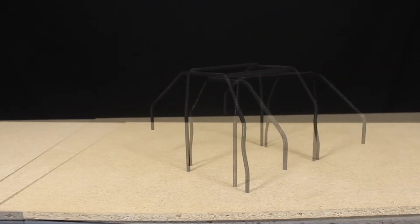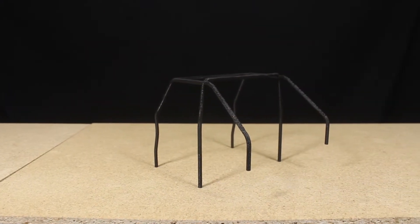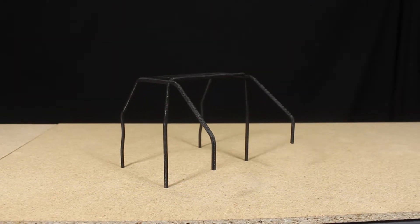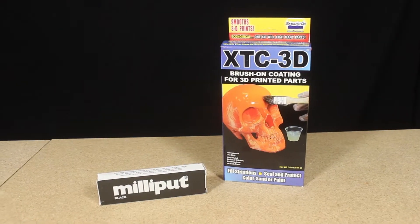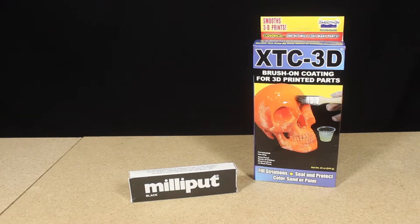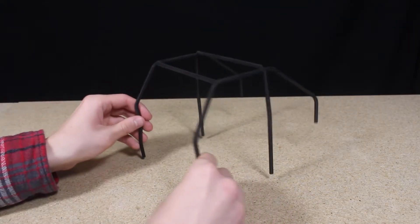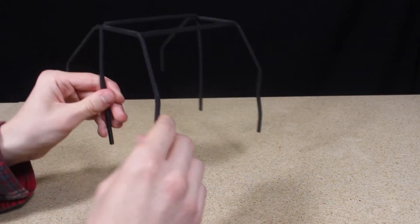Hello everyone, today I'm going to be showing you a process I use for smoothing the surface of an FDM 3D printed part. I'll be using Millie Putt Putty and Smooth-On XTC 3D to smooth the surface of this PLA plastic roll cage I'll be using on an upcoming build.